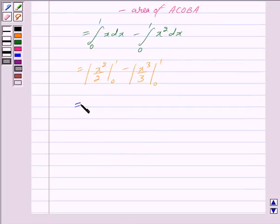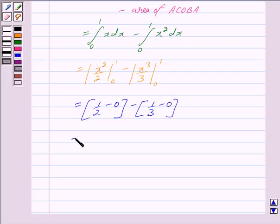This equals, putting the limits we get 1/2 minus 0, that is upper limit minus lower limit, minus again putting the limits we get 1/3 minus 0. This equals 1/2 minus 1/3. Taking the LCM and subtracting, we get 1/6.